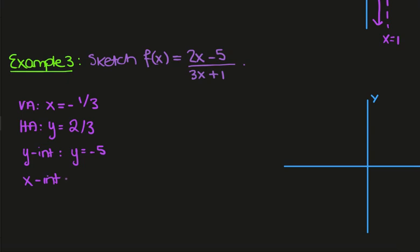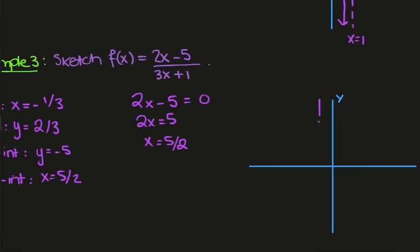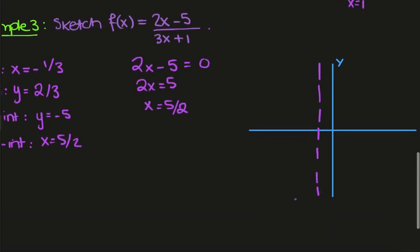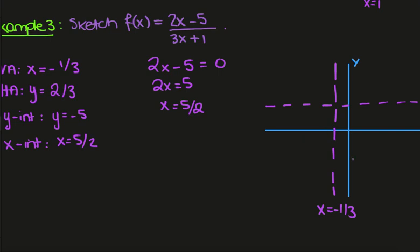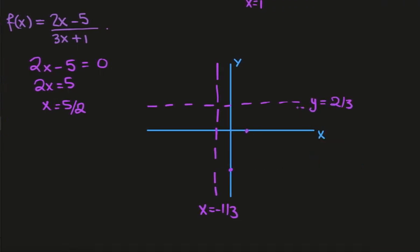The x intercept is found by setting the function equal to 0. Multiplying both sides by 3x plus 1, we get 2x minus 5 equals 0, so 2x equals 5, meaning x equals 5 over 2. Putting that into a graph, we have a vertical asymptote at x equals minus 1 third, a horizontal asymptote at y equals 2 thirds, the y intercept at minus 5, and the x intercept at 5 halves. So the hyperbola looks something like this.